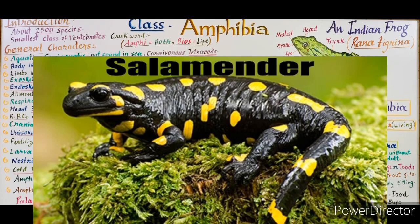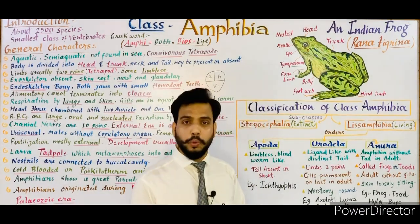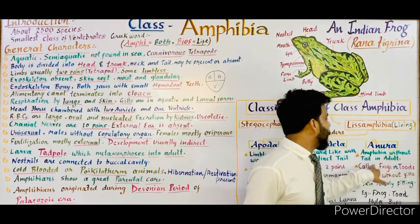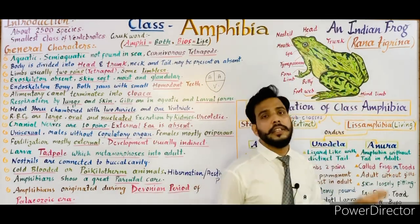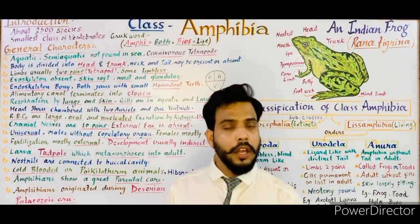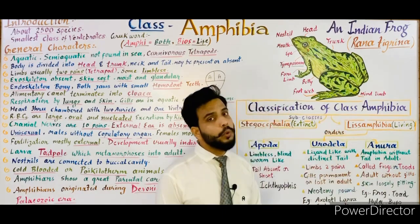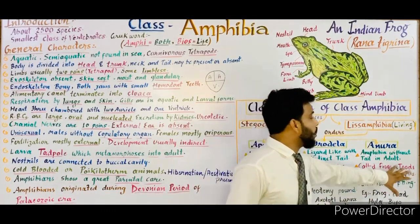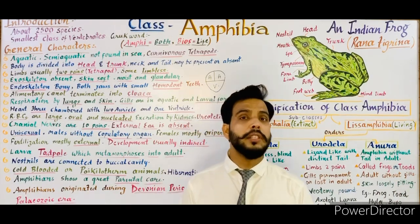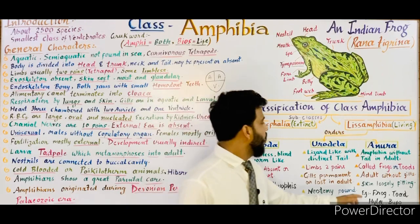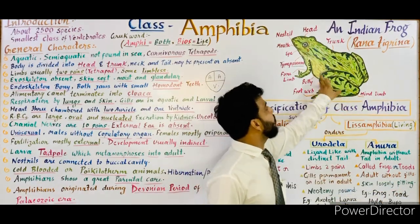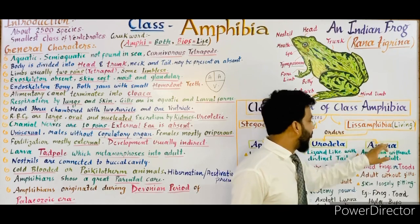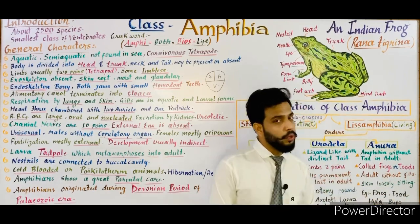The last order is Anura, consisting of true frogs and toads. In order Anura, the tail is absent in the adult — 'an' meaning absent. The tail is present only in the larval tadpole form. Adults do not have gills; gills are present only in the tadpole larva. The skin is loosely fitting, glandular, and moist. Best examples of order Anura include frog, toad, Hyla, and Bufo.